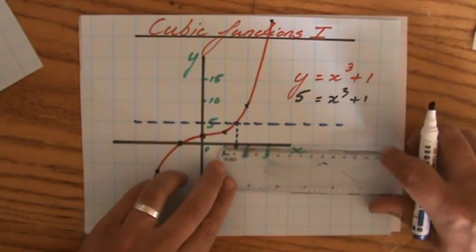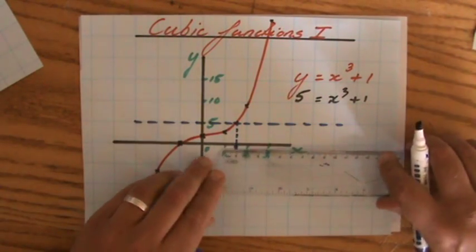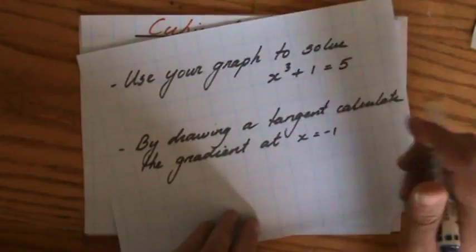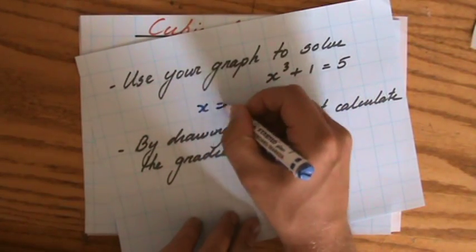And you would take your ruler, you look at the scale, 1.6. So x equals 1.6.